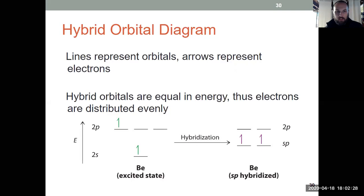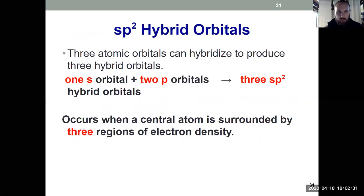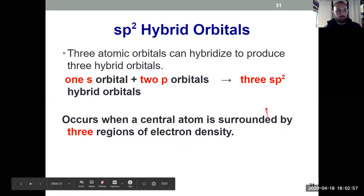So that's our first hybridization. If we have two regions of density, we are sp-hybridized. Three regions of density, now we're sp2. And there's only ever one s orbital, so these things always start with s. So if I need a total of three, now I'm taking in two p orbitals. So 1s and 2p come together to make a total of three orbitals, and those new hybrid orbitals are called sp2. So 1s and 2p come together to form three sp2 hybrid orbitals.